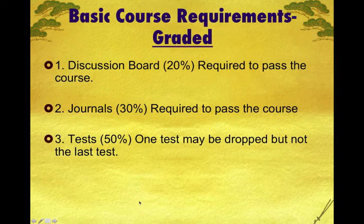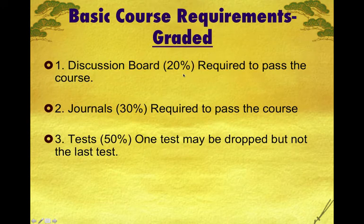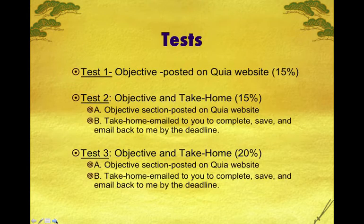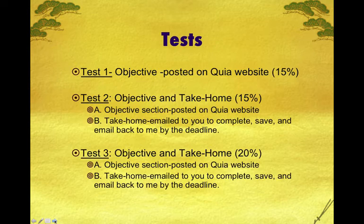There are three graded requirements to pass the course. The first is the discussion board, which is 20% of your grade and is required. The second is journals, which are 30% of your grade and are required to pass the course. The third is tests — you'll have three tests and you can drop the first or the second, but not the third. The third test is required and cannot be dropped. I will be emailing you very specific test prep information before each test.